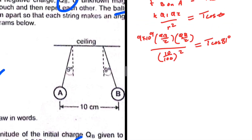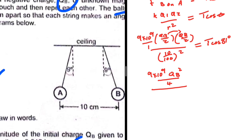Simplifying the left-hand side: multiplying numerators together gives qb², so we have 9×10⁹ · qb² divided by 4, all divided by (10/100)² which is 0.01. This equals t·cos(81°).